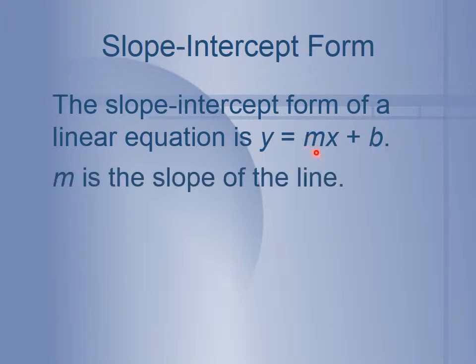That m in front of the x is the slope of the line. If you have nothing in front of x — like if it just says x — remember you still have a 1 in front of x, so your slope would be 1. If you just had y equals some number, then think of it like this: there's a 0 in front of x, which means m is 0, because 0 times x is 0. So there's always going to be some sort of slope for your linear equation.